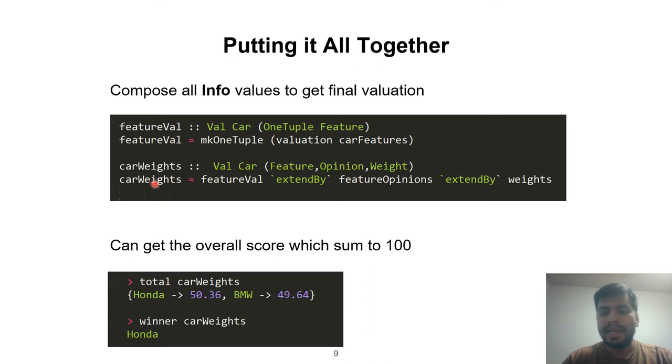When we have all the maps, we can simply compose them together to get the final valuation, which we call car weights. We can supply this final valuation to the total function, giving us the final scores for Honda and BMW. Here we see that Honda slightly edges past BMW. We also have a very convenient function called winner in MADMAX that takes the final valuation and tells us the most preferred alternative, which is Honda here.